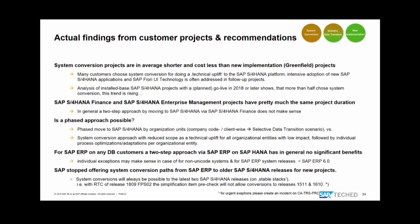An important point: when you're doing a system conversion to S/4HANA, we are not going to allow system conversion to releases older than the latest two releases. So currently, with the existence of 1909, the stable releases are 1809 FPS2 and 1709. With the existence of 1909, we'll be blocking system conversions to 1511 and 1610. This will continue — with the existence of 2020, we'll block 1709, and so on. Check the release information notes of those releases for confirmation.